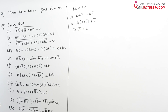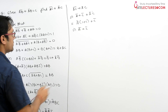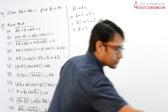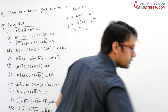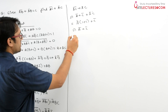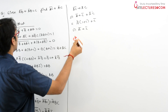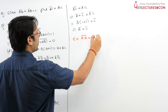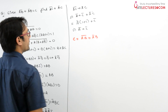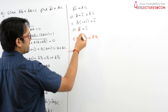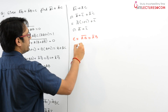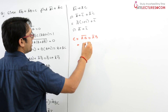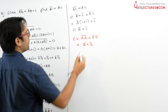And we know what is the value of C. C can be written as AB whole complement plus A complement B. You can do the same thing here also — applying De Morgan's law, so it can be written as A complement plus B complement.